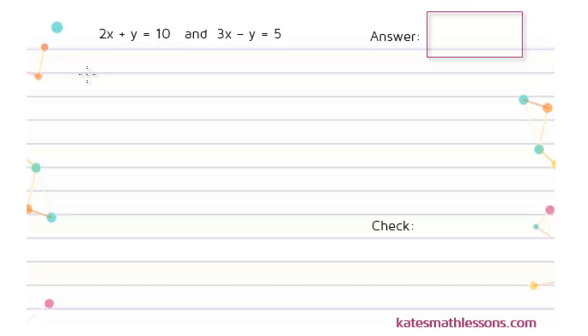When you use elimination, the first thing you do is just line your equations up vertically. So I'm going to write the first one here and then I'm going to write the second one right below it. You want to have everything lined up. You have your X's lined up, Y's are lined up, equals signs are lined up, and your constants are lined up.